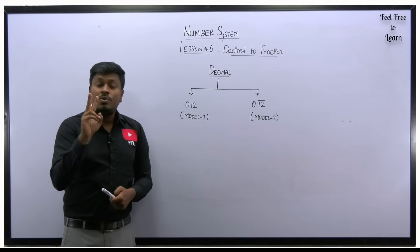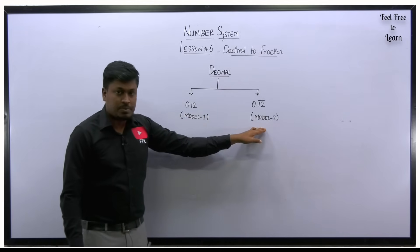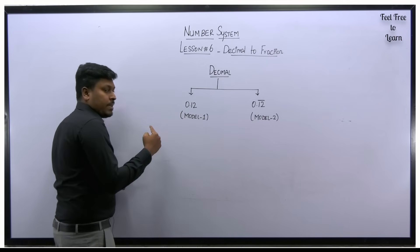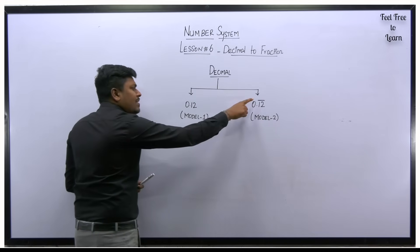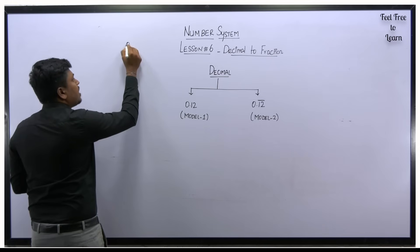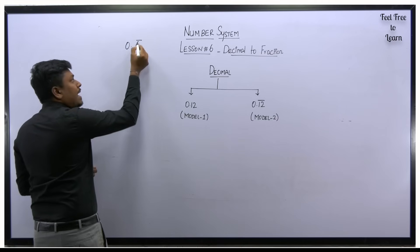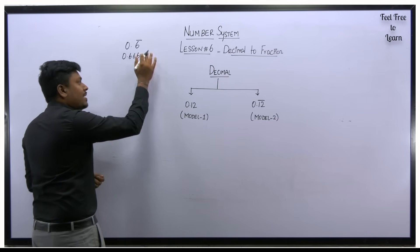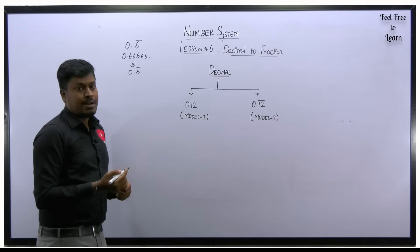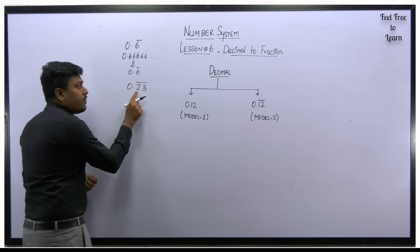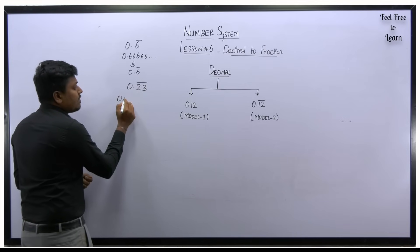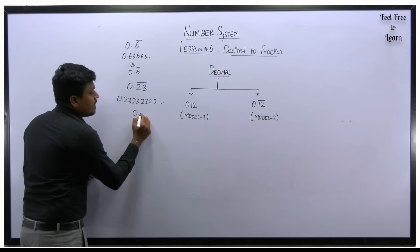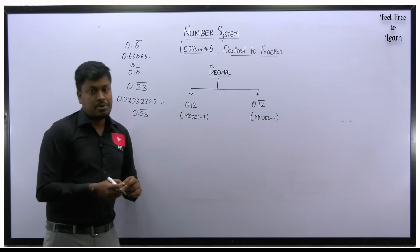There are two types of decimal numbers. Model 1 is 0.12 (a plain decimal), and Model 2 is 0.12 bar. A bar over a number means it repeats — for example, 0.6 bar means 0.666... going on infinitely. Similarly, 0.23 bar means 0.2323... going on. They write it with a bar because the number has no end. These are called Model 2 questions.